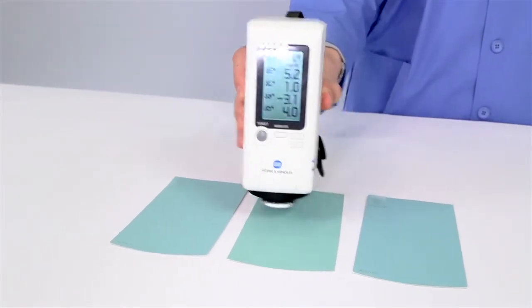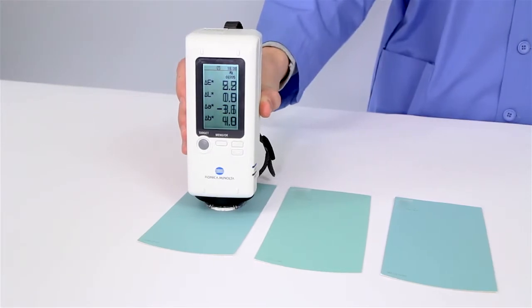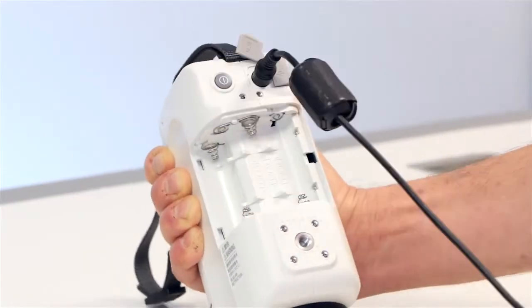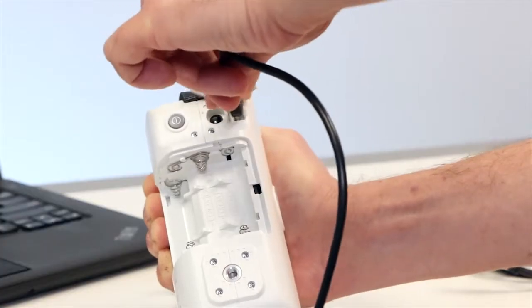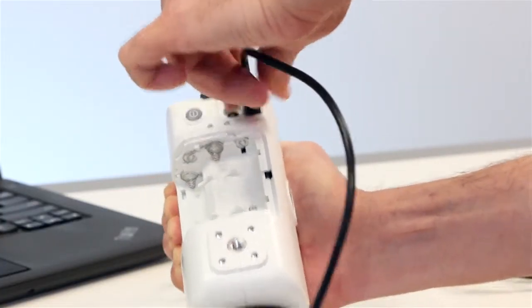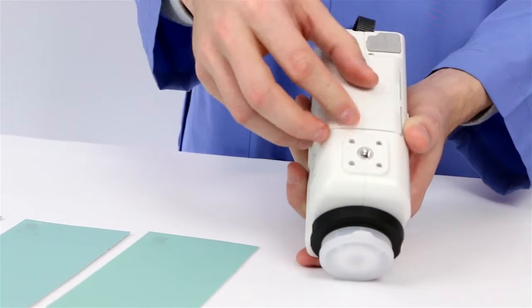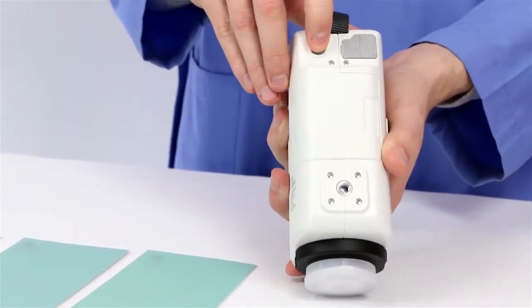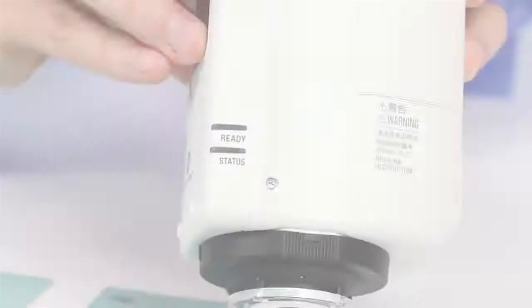You can also operate the CR-10 Plus with any one of three power sources, including an AC adapter, USB cable, or batteries. Ergonomic and lightweight design allows you to measure color difference with ease.